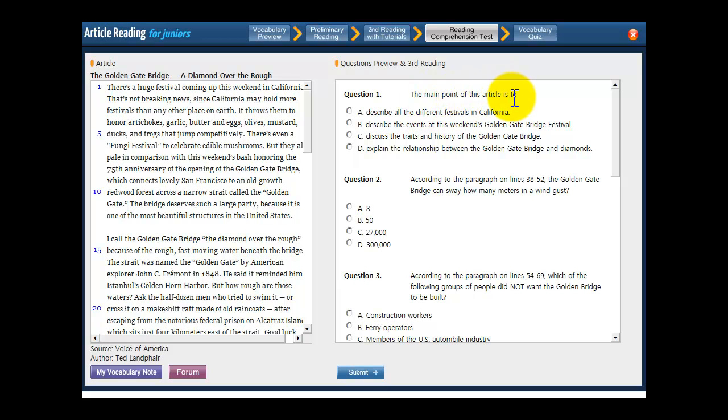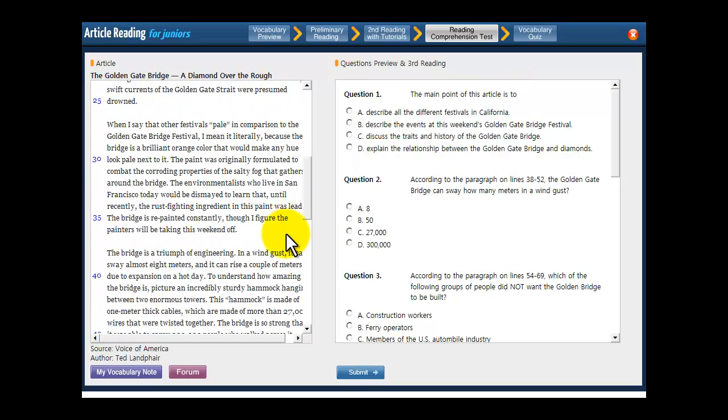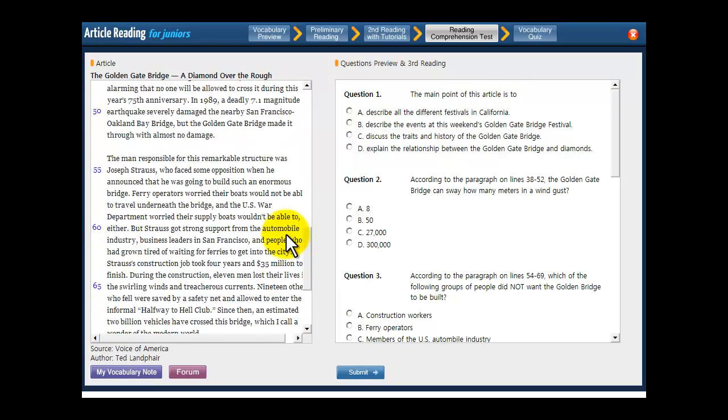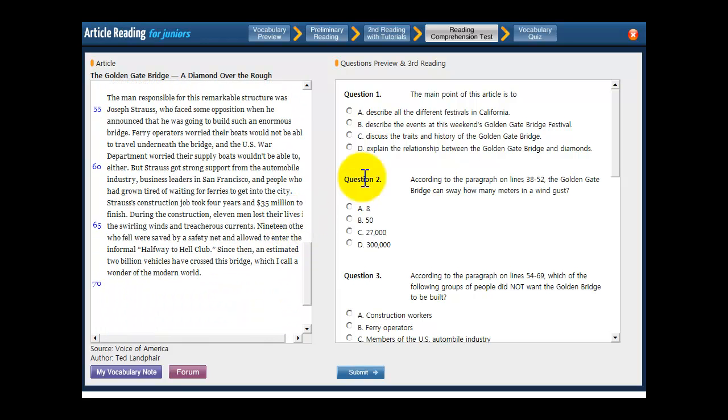And that's really what the first question is asking too. The main point of this article is to do what? So what is the main idea of the article? What's it trying to teach you? And I would say it's trying to teach us about the history of the Golden Gate Bridge and about what it's made of and how it was made, because that's the basic structure of the article.